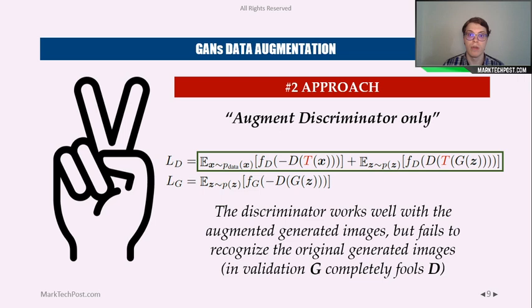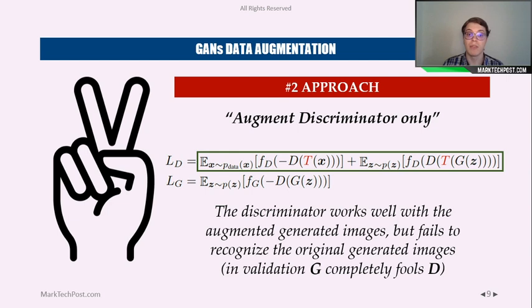But the second approach fails even harder. In this approach, we augment the discriminator only — both the real and the fake inputs to the discriminator — so we entirely modify the loss function that refers to the discriminator. These components work well with the augmented generated images, but fail to recognize the original generated images.